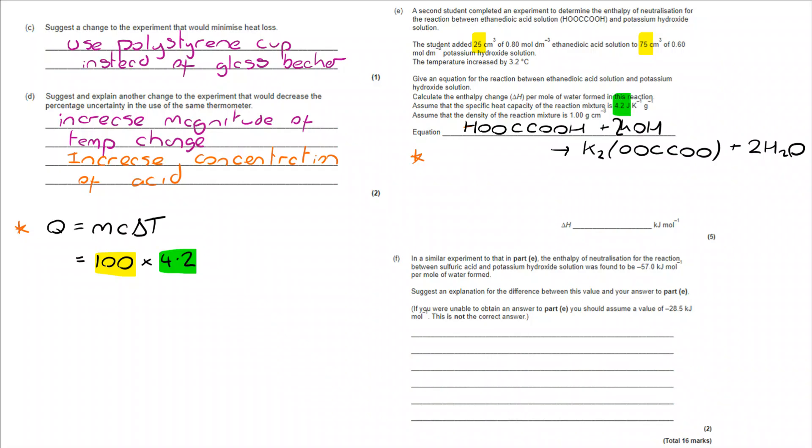We're multiplying that by specific heat capacity. That's 4.2, again, provided in the question. And we're multiplying that by the change in temperature, delta T, which has been provided in the question. That takes us to a Q value of 1344. And you've got to remember that Q is measured in joules.